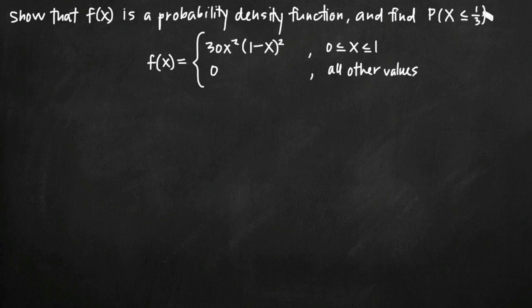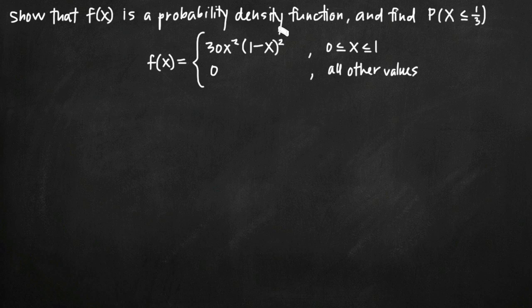In order to verify that f is a probability density function, we need to do two things. First, we need to show that f is greater than or equal to 0 everywhere in its domain. Secondly, we need to show that the integral of f on the range negative infinity to positive infinity is equal to 1. If we can prove those two things, then we can prove that f is a probability density function.